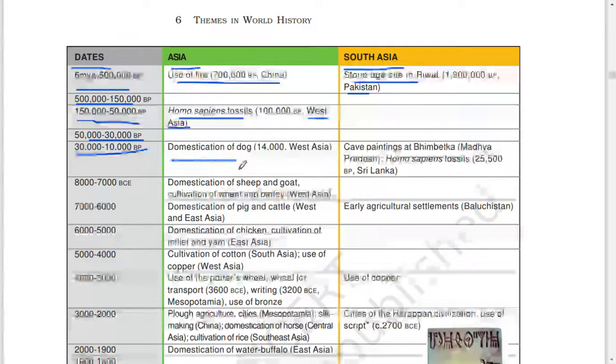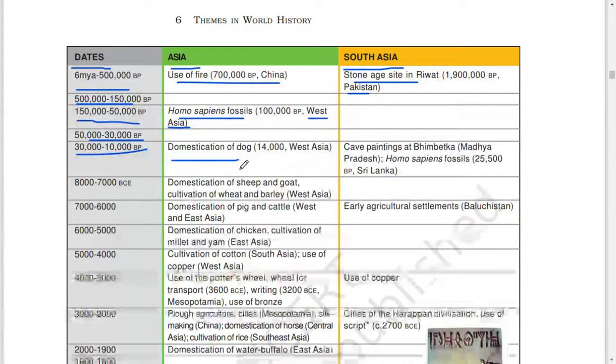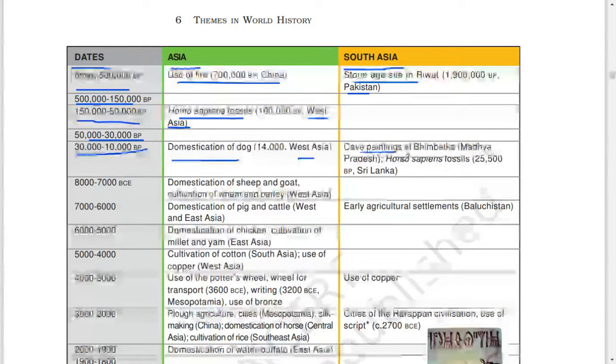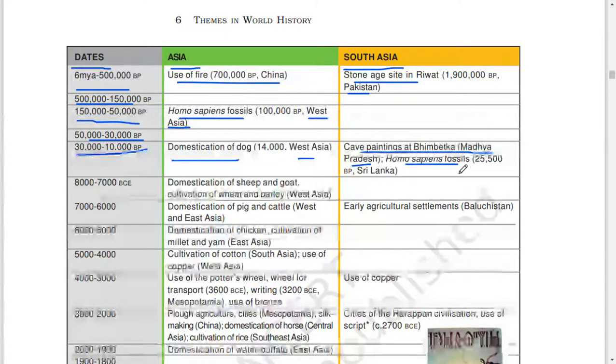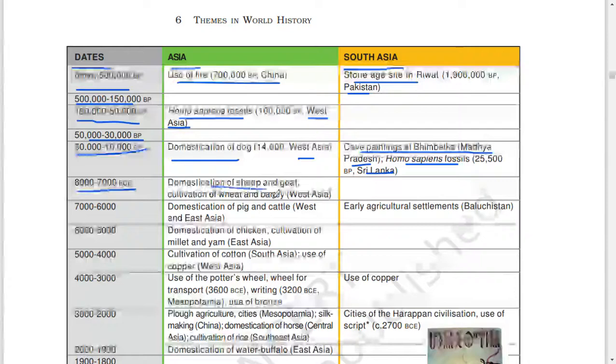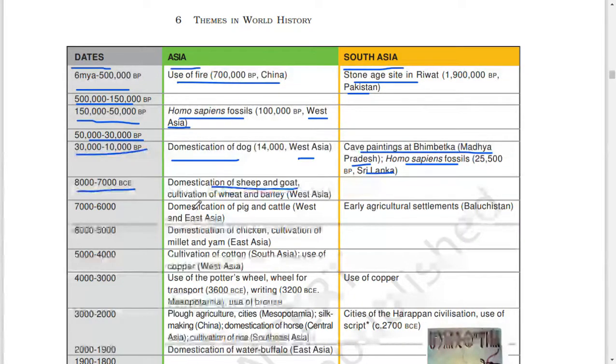Domestication of dog, 14,000 West Asia. Cave painting in Bhimbetka, Madhya Pradesh. Homo sapiens fossil, 25,000 BP, Sri Lanka. 8,000 to 7,000 BCE: domestication of sheep and goat. Cultivation of wheat and barley, West Asia.